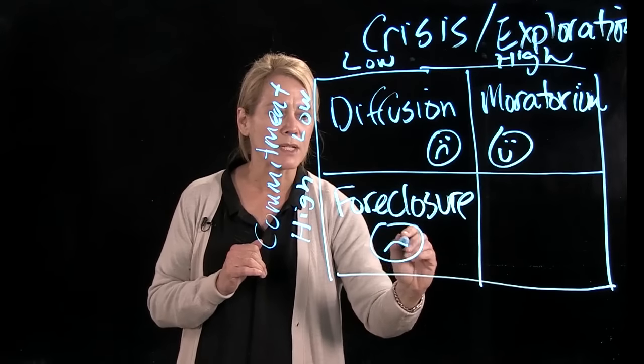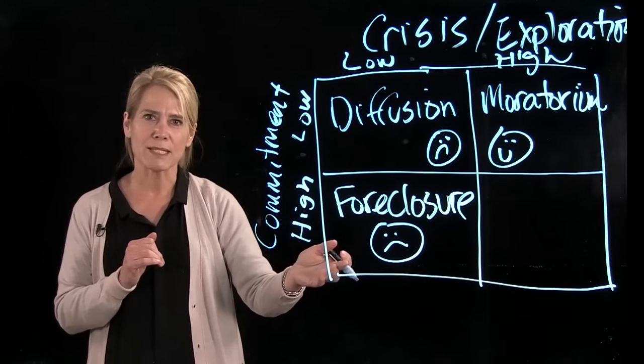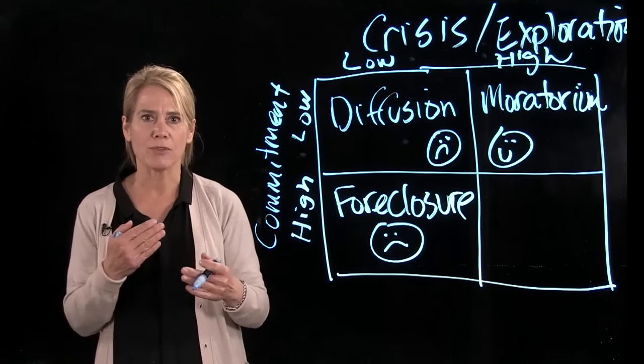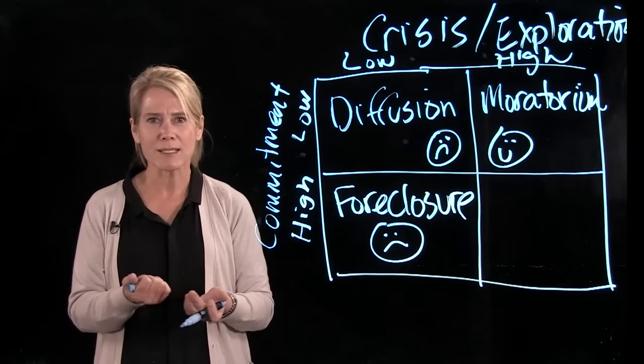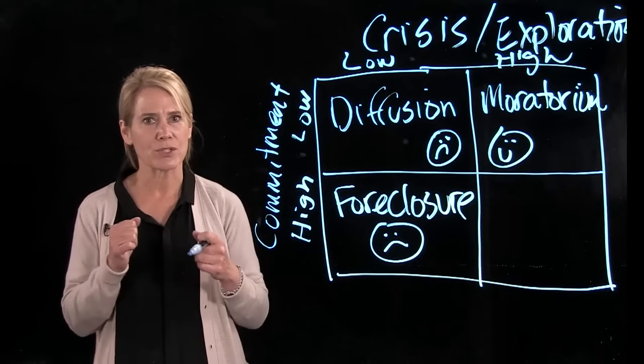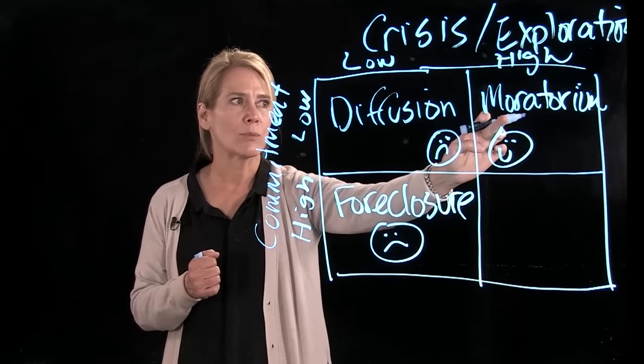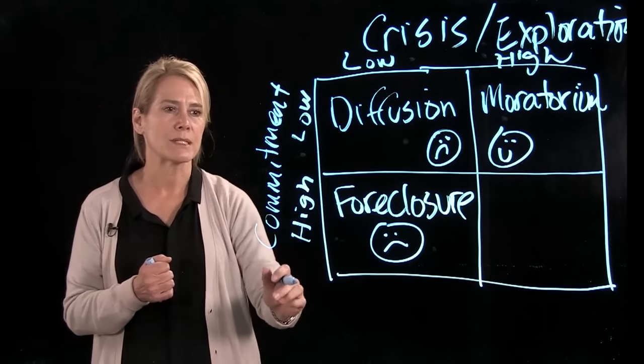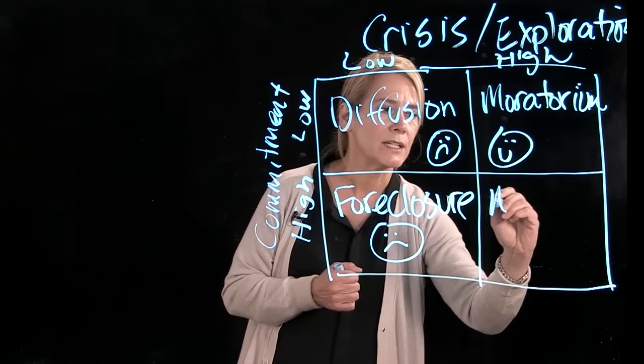So your commitment was high, but you foreclosed other options without doing enough exploration. So foreclosure, I'm going to say, it's not quite as bad as diffusion, but it's not a great place to be because what will happen is you get to be 40 years old and it's like, wow, I've been doing this job for 20 years. I never really liked it. I have all of my fun after hours. Well, that's not great. Wouldn't you like to have fun at your job and say, I love it. Even on my worst day, I'm still glad to be there. That's what you want. And that's where moratorium might get you, but foreclosure won't. So you've foreclosed other options, not a great place to be. When commitment is high, crisis has been high and commitment is high, that's what we call identity achievement.